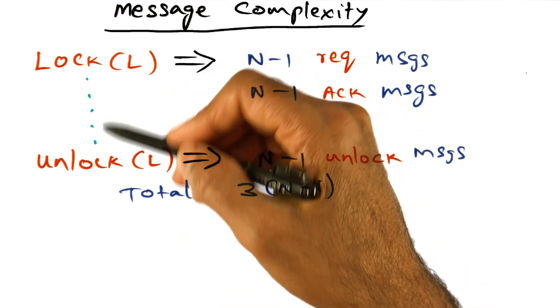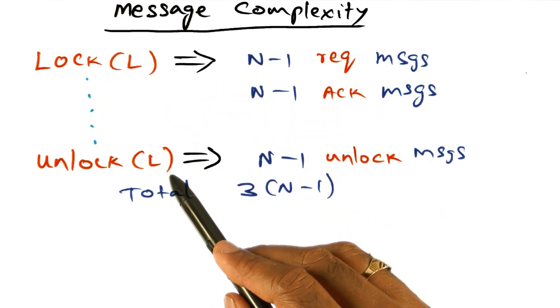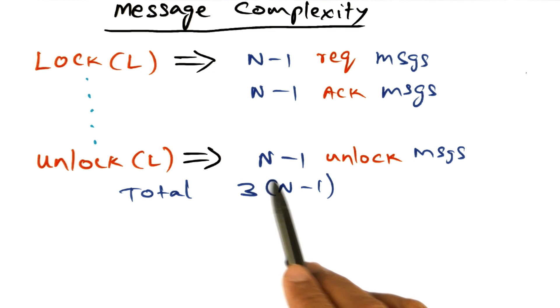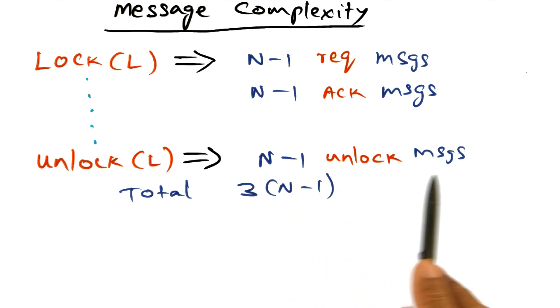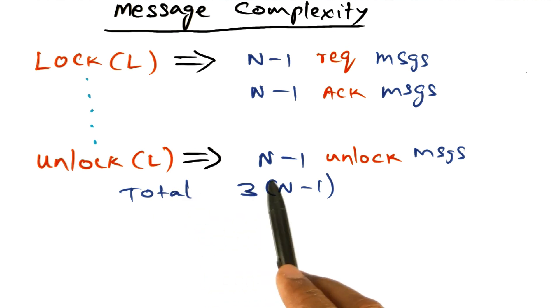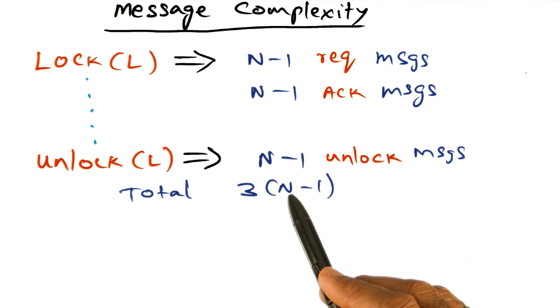And then the process is happy using the lock for the critical section, and it gets to the unlock primitive. The unlock primitive, once again, we're going to send n minus 1 unlock messages. So the unlock primitive involves sending an unlock message to every one of the peers in the distributed system. So n minus 1 messages are sent out in the network.